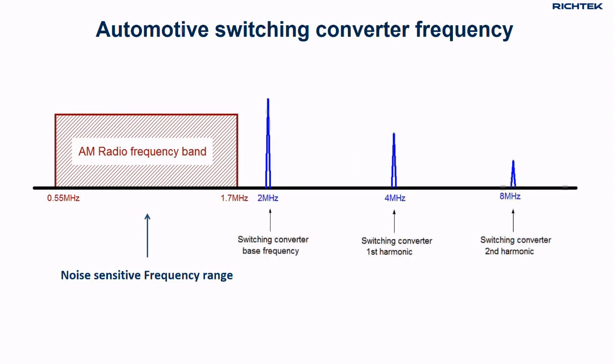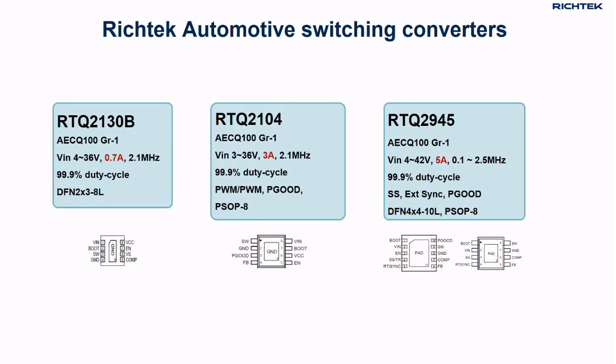This will worsen the maximum duty cycle even more. Many Richtek automotive buck converters are designed to operate at 2.1 MHz. To solve the duty cycle limitations, these converters are capable to operate at very high duty cycles, up to 99.9%.